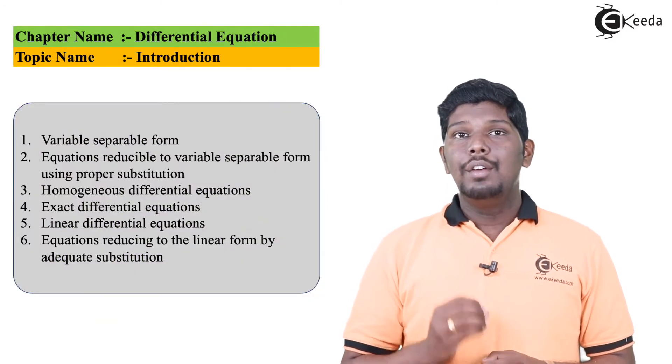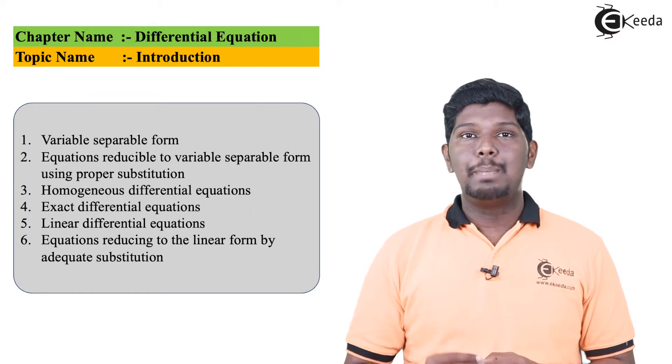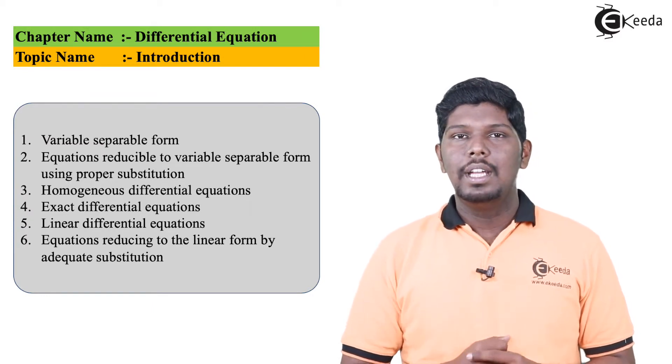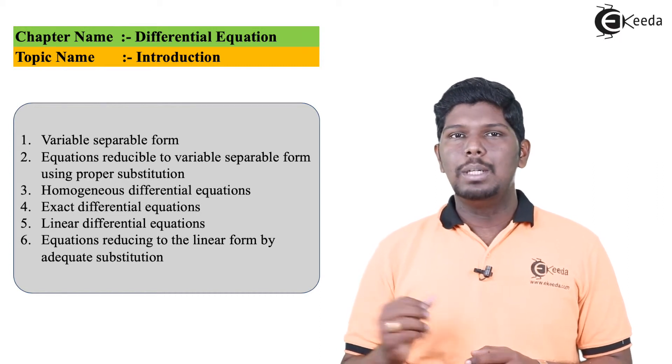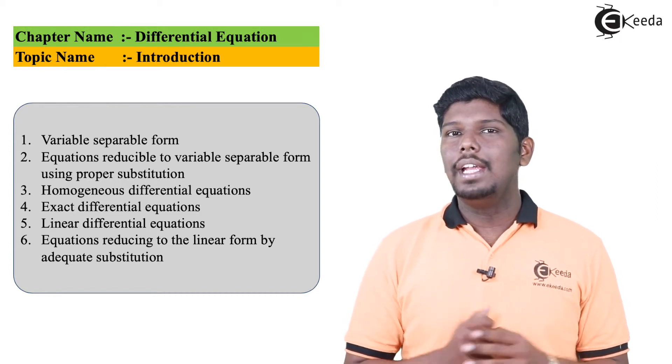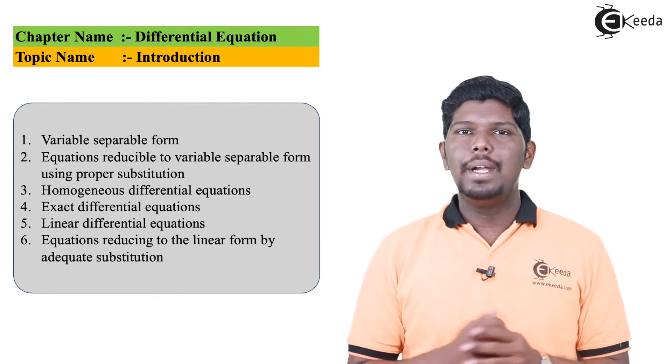Let us see one by one. The first method is called the variable separable method, or you can say variable separable form. The second method is variable separable form using particular substitution. Sometimes we cannot directly separate the variables, so for that purpose we use certain particular standard substitutions.